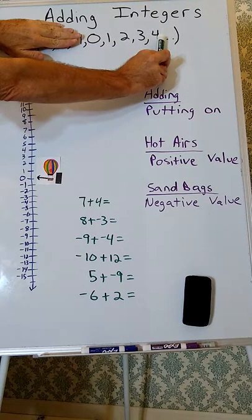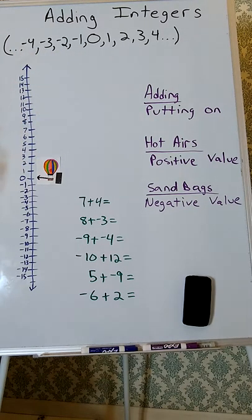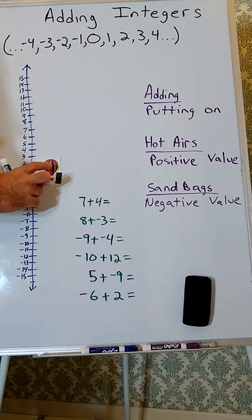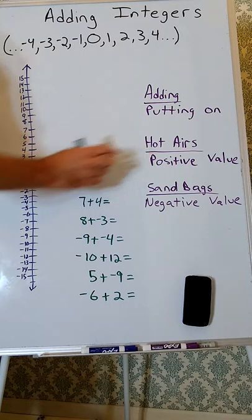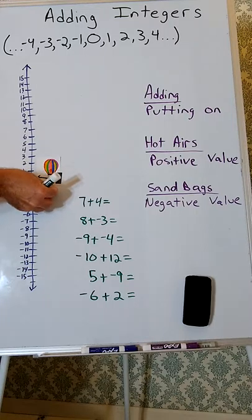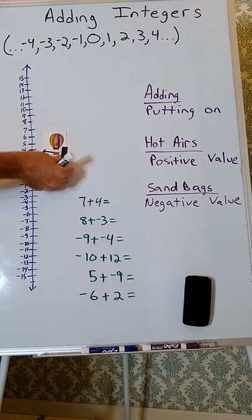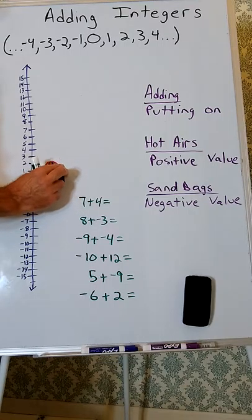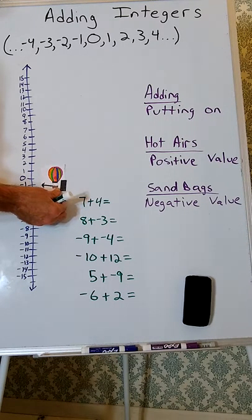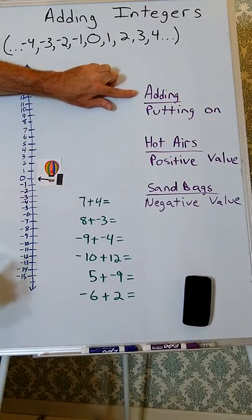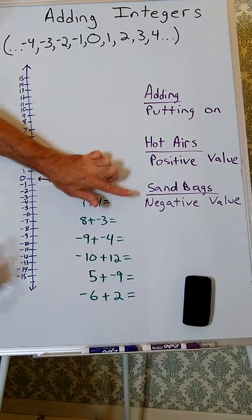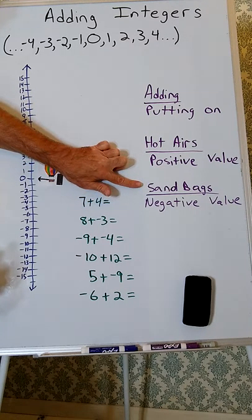Integers are the whole numbers and their opposites. We're going to be using a hot air balloon model, and in this model adding means we're putting something onto the hot air balloon. Hot airs represent a positive value because if I put hot air on a balloon it's going to rise, and if I put sandbags on the balloon that's going to cause it to fall or go down. When we're adding something to the balloon we are putting something on — if we are putting on a positive value we're putting on hot airs, and if we're adding a negative value we're putting on sandbags.